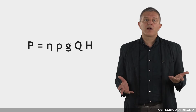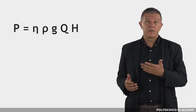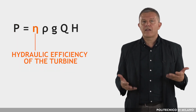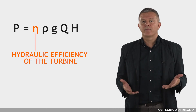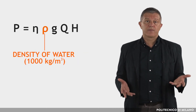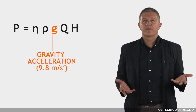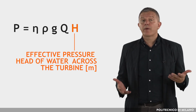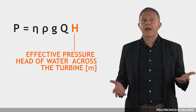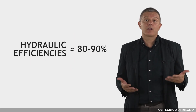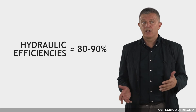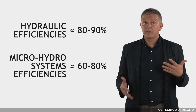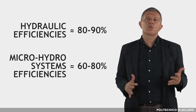The general formula for any hydrosystem's power output is as follows: P is the mechanical power produced at the turbine shaft, eta is the hydraulic efficiency of the turbine, rho is the density of water, g is the gravity acceleration, Q is the volume flow rate passing through the turbine, and H is the effective pressure head of water across the turbine. The best turbines can have hydraulic efficiency ranging from 80 to over 90%, although this will reduce with size. Microhydrosystems smaller than 100 kW tend to be 60 to 80% efficient.